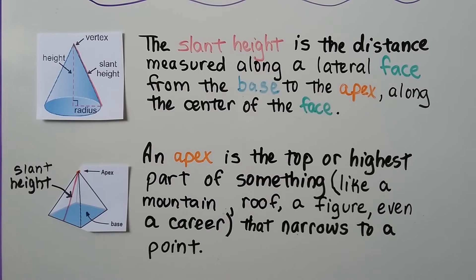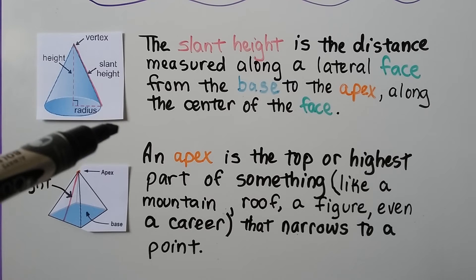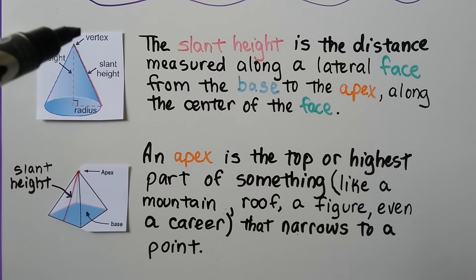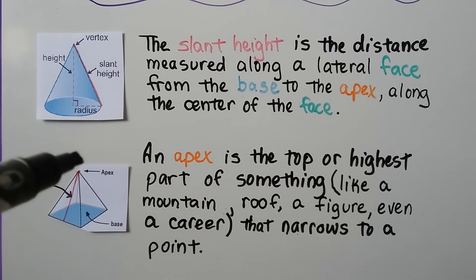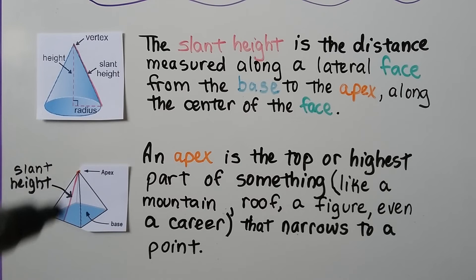And by now you should be familiar with slant height. Slant height is the distance measured along a lateral face from the base to the apex, or top vertex, along the center of the face. So here we've got a slant height on this square pyramid here. You can see it coming straight down that face in the center of it.